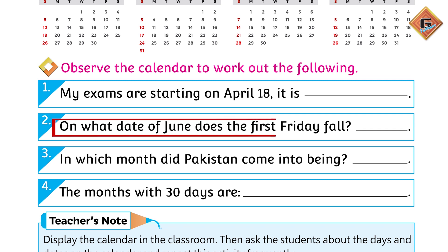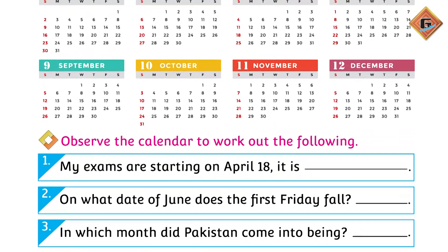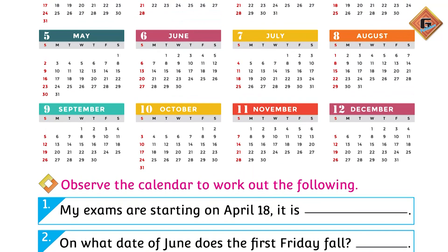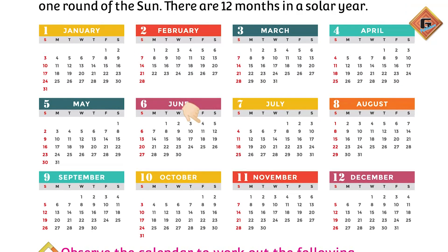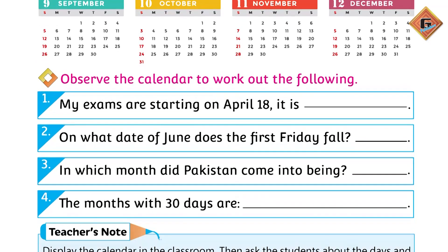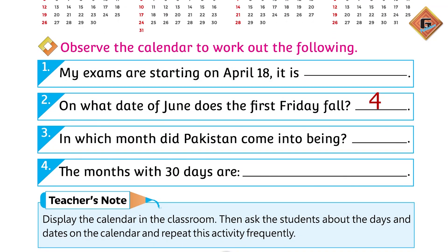On what date of June does the first Friday fall? Kis date pe Friday first of June ka hai? We will see the days — Sunday, Monday, Tuesday, Wednesday, Thursday, and Friday. Going down the Friday column, which date is the first one? Excellent — it is 4. So we will write: what date is the first Friday? The 4th of June.